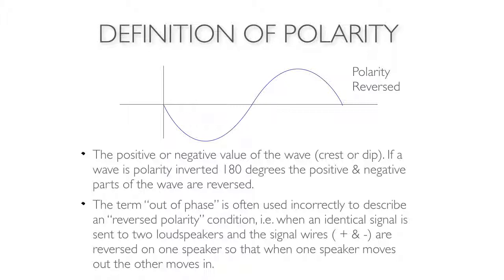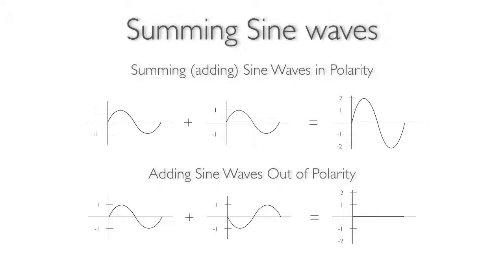Try this out at home — it's very easy to hear when this happens. When we add the same sine wave in polarity, we simply get a louder sound wave. However, if we add the same sine wave to an out-of-polarity sine wave of equal amplitude, it will completely cancel out. The positive part of the wave adds with the negative part of the other wave, giving you completely canceled amplitude.